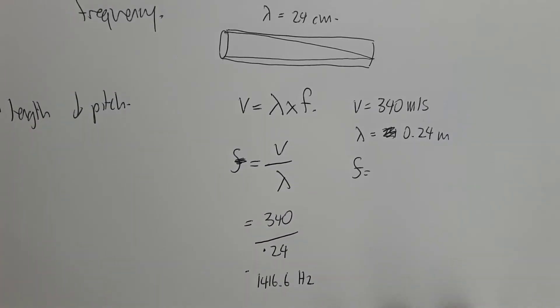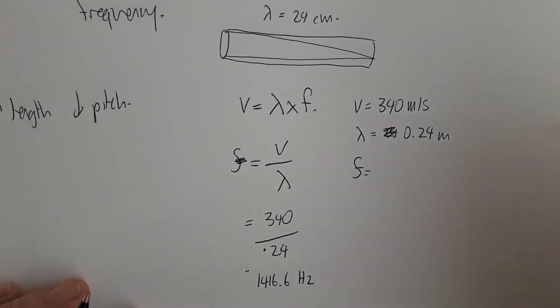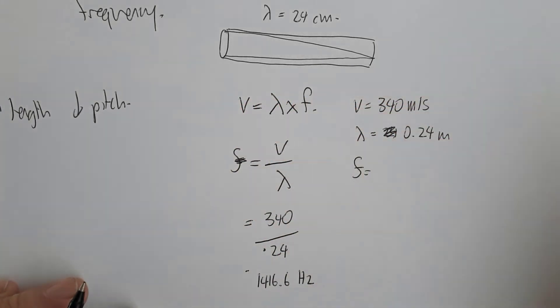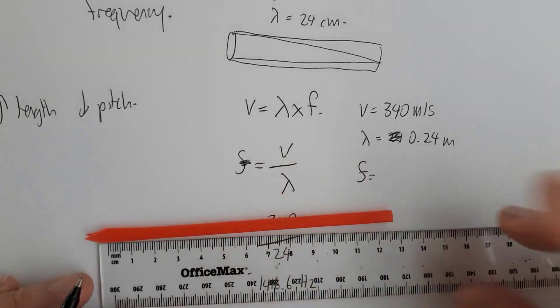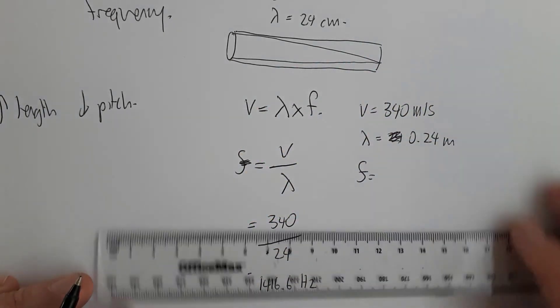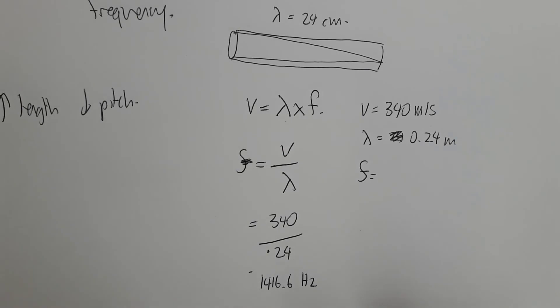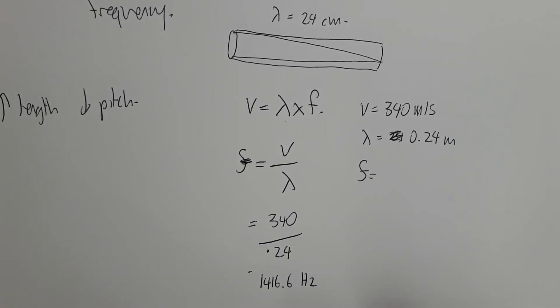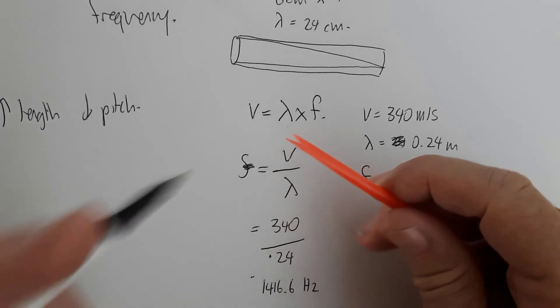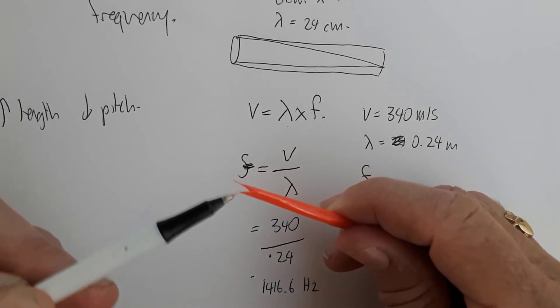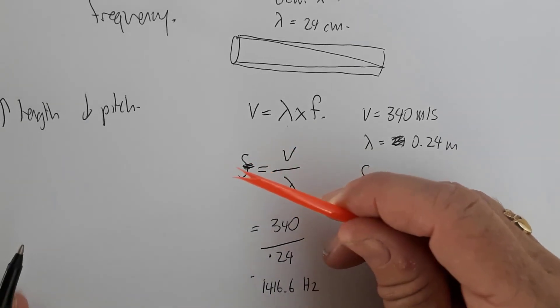So we're able to calculate the frequency of the sound that was produced by this pipe. Now, we could do the same thing with the other pipe. I think we assumed it was about twice the length. So if that's 12 centimeters, if the wavelength is double, that means the frequency is going to be half. So the other pipe has a frequency of around about 700 hertz. What does that mean? It means that it's vibrating at 700 times a second.